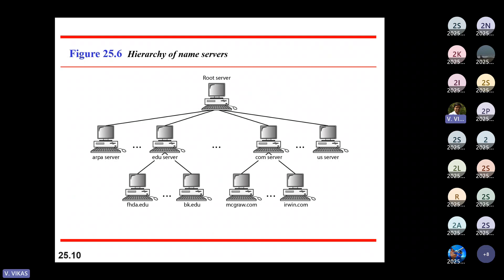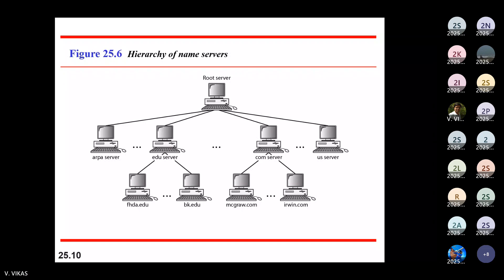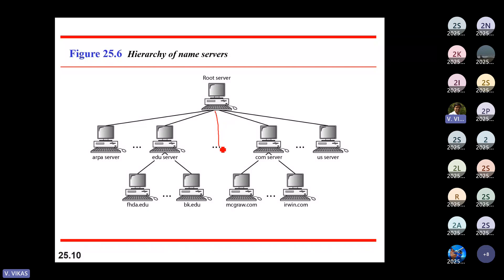In the distribution of namespace, we look at the hierarchy of name servers, zones, root servers, and primary and secondary servers. In the hierarchy, the root server communicates with arpa server, edu server, commercial server, and country servers like 'us'. Under education we have different colleges: fhda.edu, biga.edu, mcgraw.com, irwin.com, and so on.